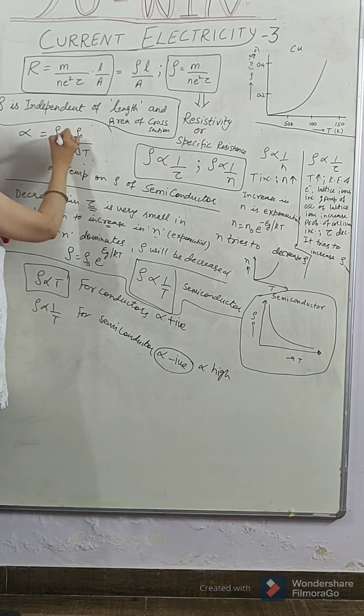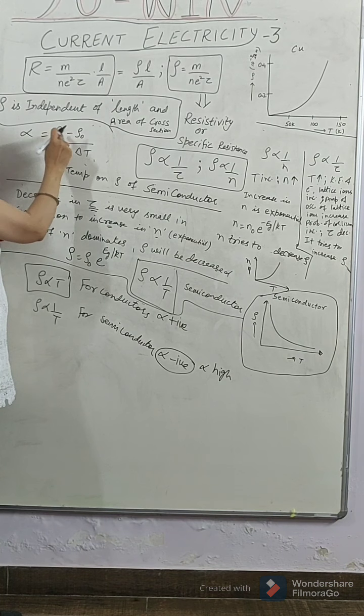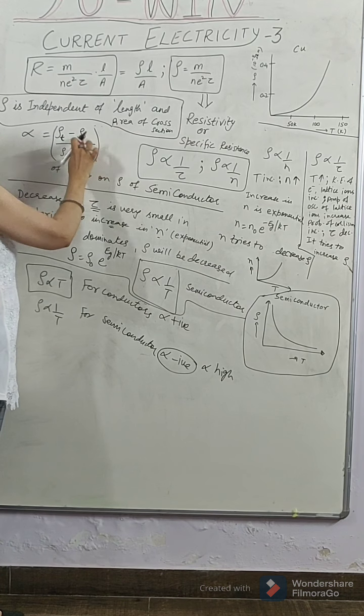So, if rho T is final, that means when you increase temperature the resistivity decreases. Then this numerator will become what? Negative. So, alpha is negative.